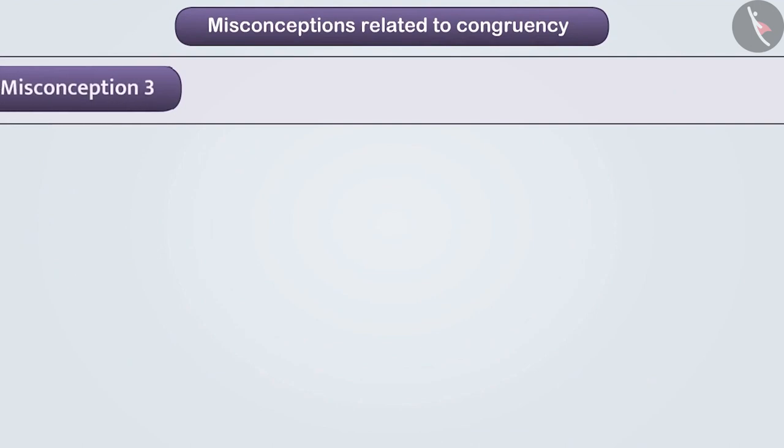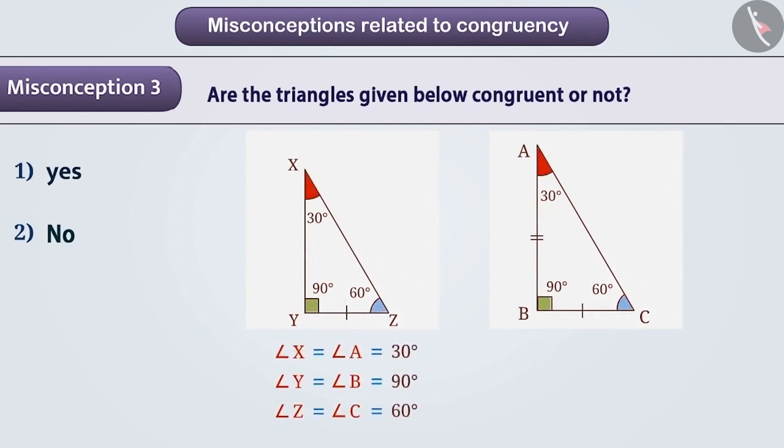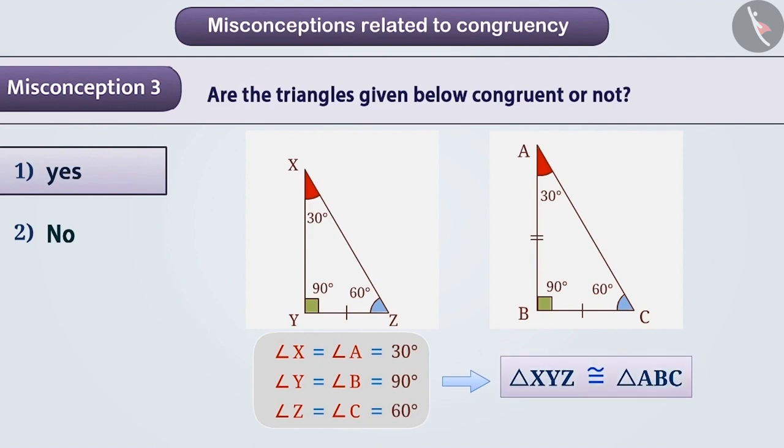Misconception 3. Are the triangles given below congruent or not? Some children notice that the angles of both the triangles have equal measures. So, they think that the given triangles are congruent. And they select option 1 as their answer. Let's find out the answer given by them is right or wrong.